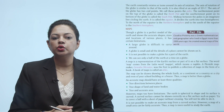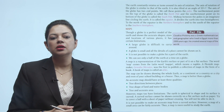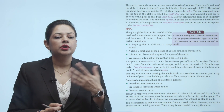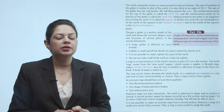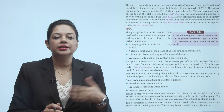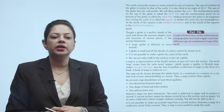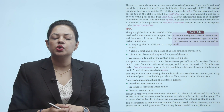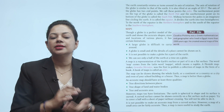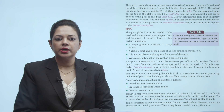The equator divides the Earth into two hemispheres. To the north of the equator is called the Northern Hemisphere, and to the south of the equator is known as the Southern Hemisphere.